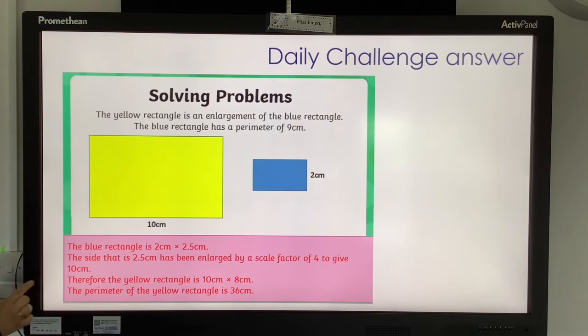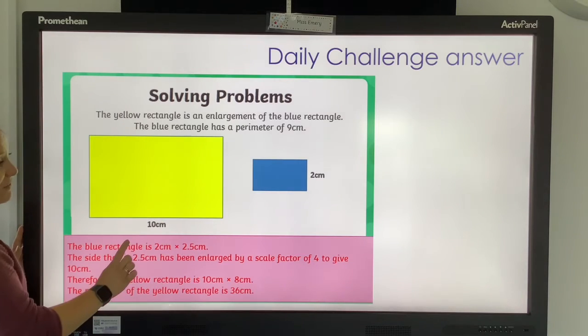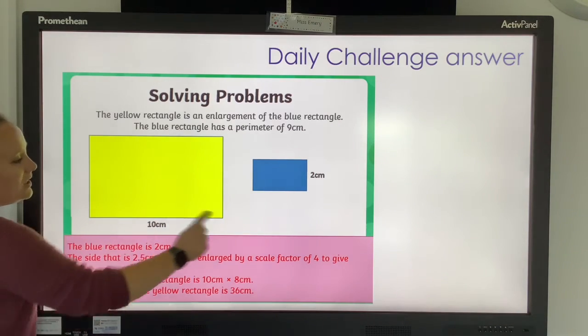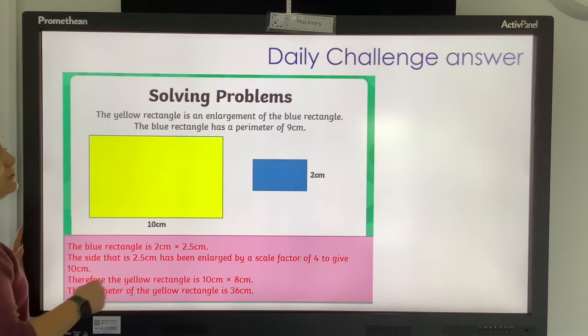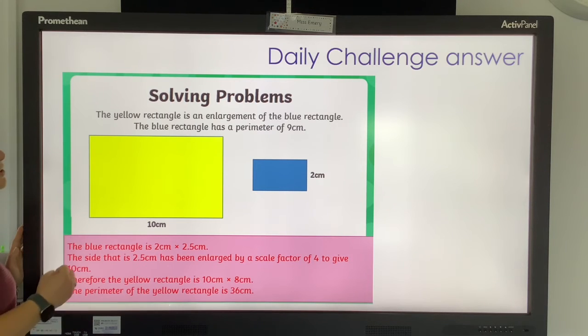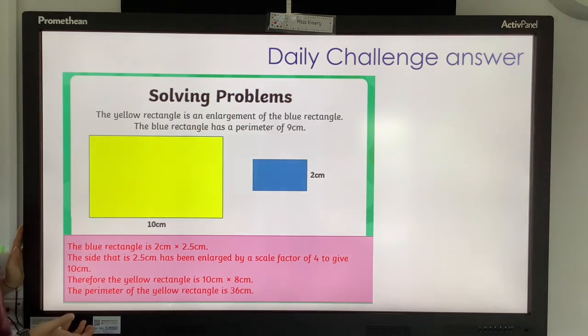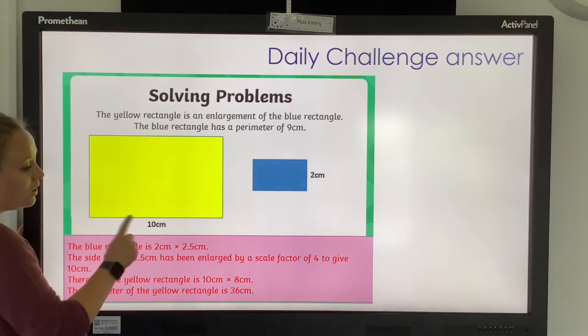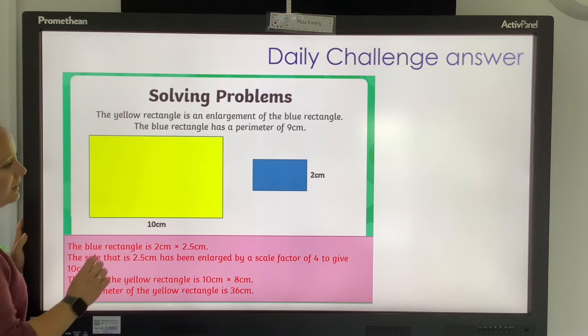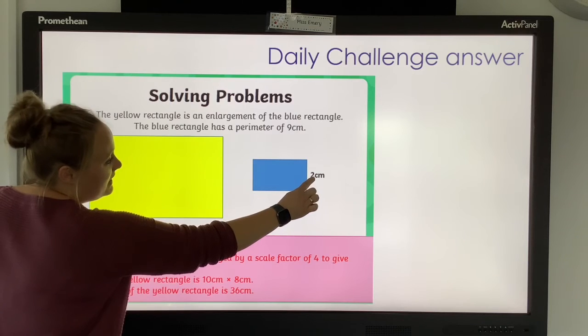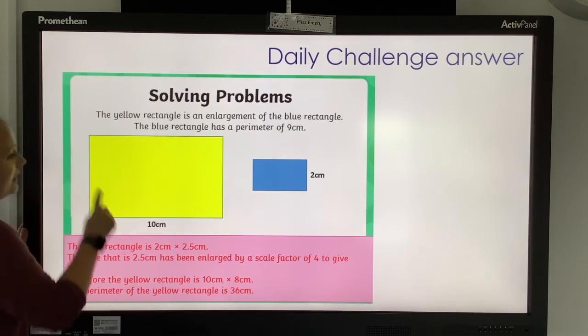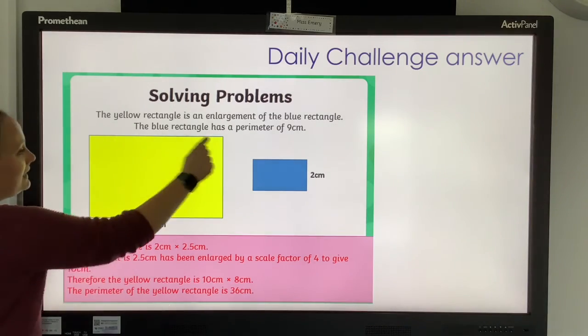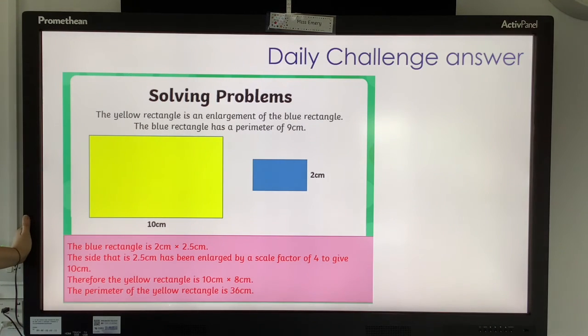Now you know that this side is 2.5 centimetres, you can work out your scale factor to begin to work out what this side is. So if you've gone from 2.5 to 10, if you double 2.5, you get 5. And if you double that, you get 10. So you are multiplying by 4. If you know that 25 times 4 is 100, it's the same concept. So now you know that you've gone 2.5 times 4. So your scale factor is 4. That's then all you need to multiply this by to work out this side. 2 centimetres times 4 is 8. So this side is 8, this side is 8 and this side is 10. And if you add them all together, you get 36. So the perimeter of the yellow rectangle is 36. Really well done if you got that right.